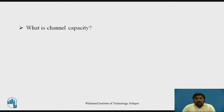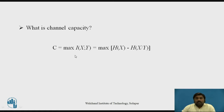Before starting with the actual session, let's pause the video and think about what is meant by channel capacity. Channel capacity equals the maximum rate of mutual information, where I(X,Y) is the mutual information. The maximum value of that is nothing but your channel capacity. It is also the difference between the entropies — the initial entropy minus the final entropy — and the maximum value of that difference is your channel capacity.